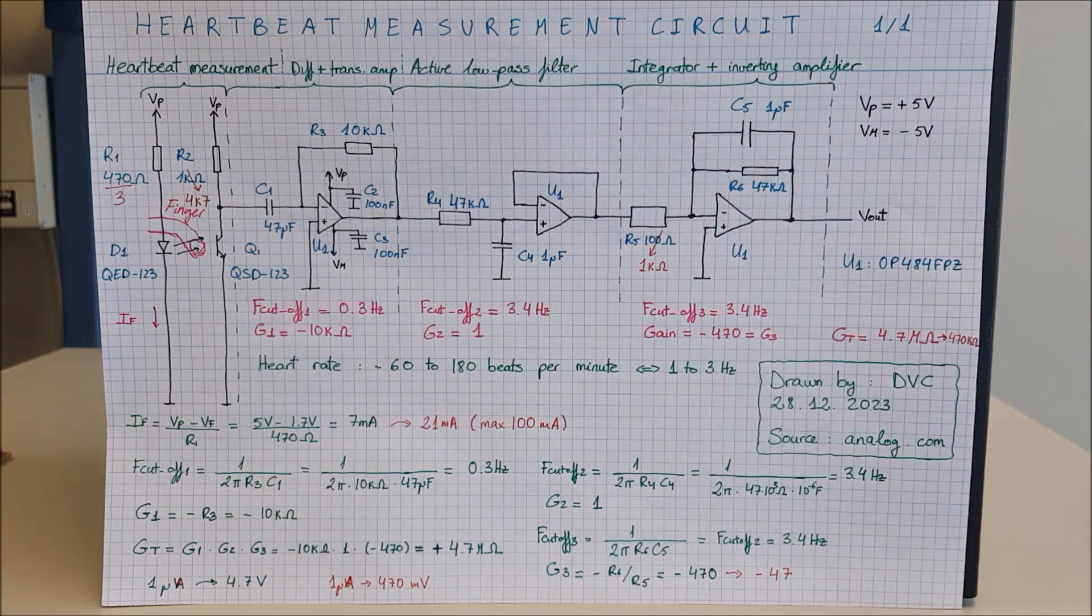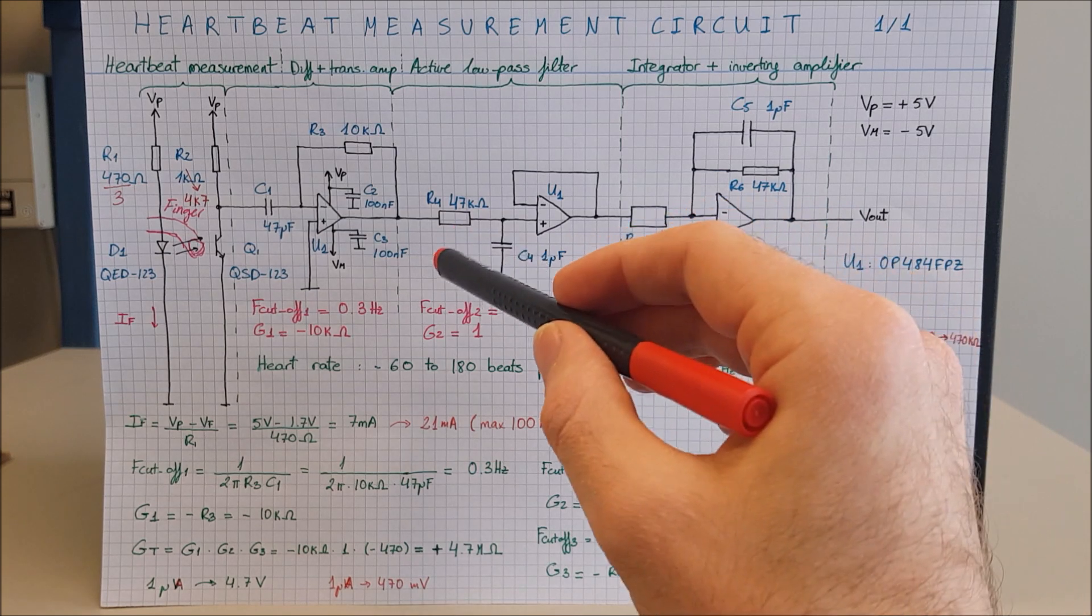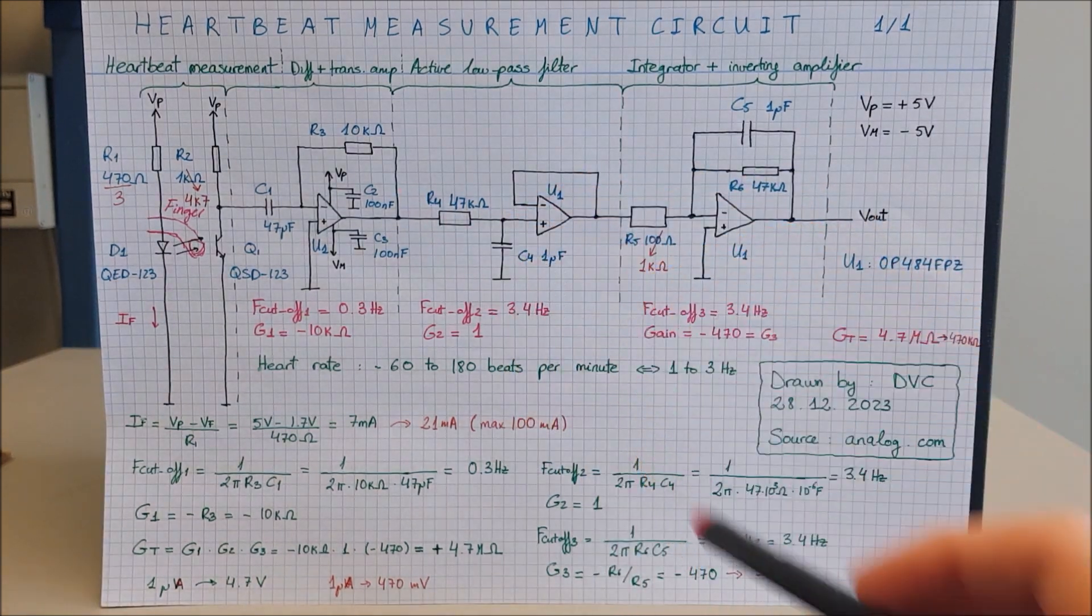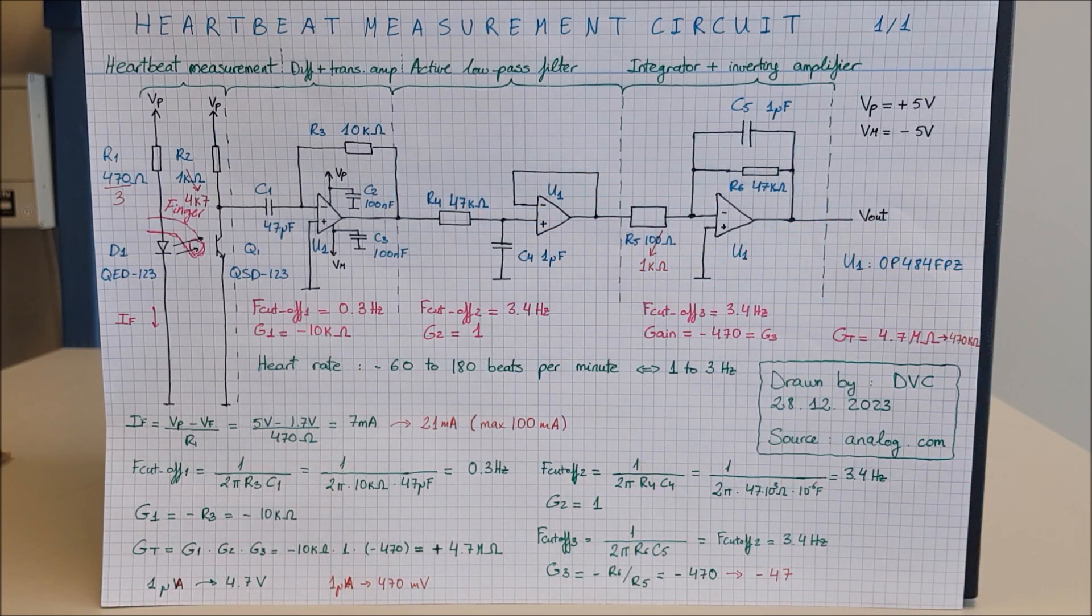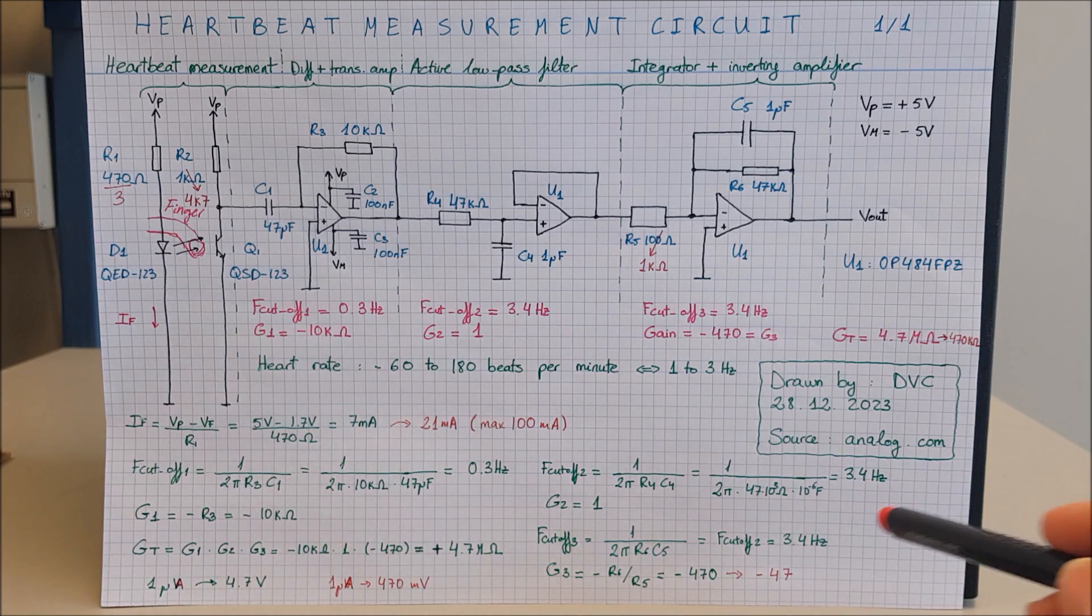I have an active low-pass filter. We don't want signals with frequencies higher than 3 Hertz, so we want to get rid of those. That is the purpose of capacitor C4. The cutoff frequency is 1 divided by 2 pi R4 times C4, which is 3.4 Hertz. Signals with frequency higher than 3.4 Hertz will be cut off.